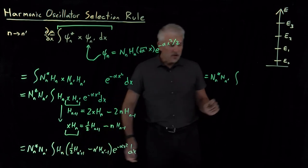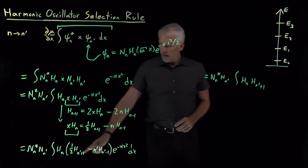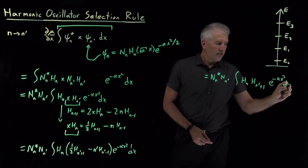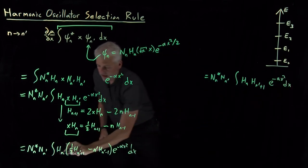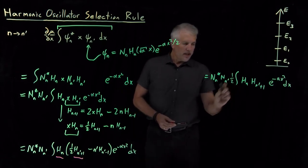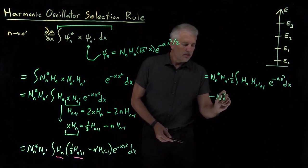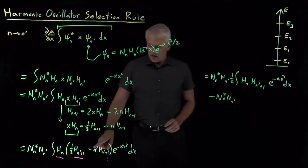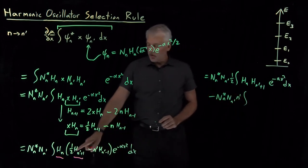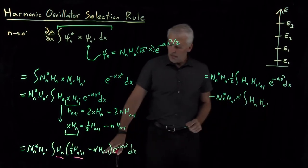So I've got an integral that looks like H_n times H_n prime plus 1, and I'll go ahead and throw in the 1 half. I've also got the other term. So that minus sign, an n prime, and then the inside of the integral that I am interested in looks like an H_n times H_n prime minus 1.